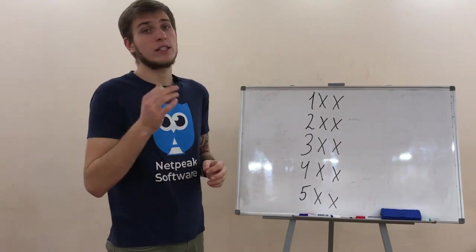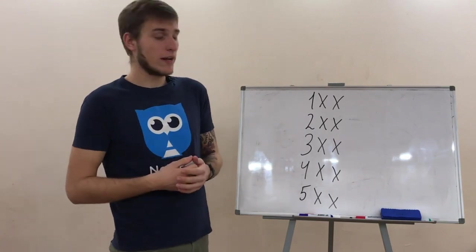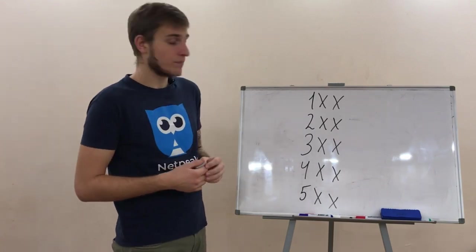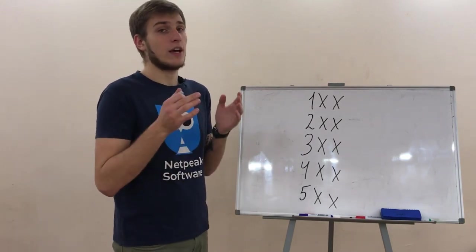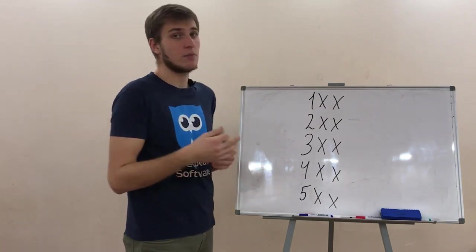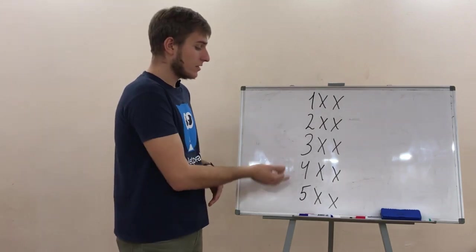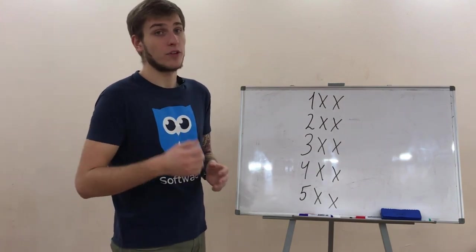400 status codes tell us about the client site error. The reason for an issue is briefly described right after the three digits. And the last one is 500 status codes. They are also error codes, but in this case, it's about the server side issues. The same as in previous class, the reason for an issue is briefly described right after the number.